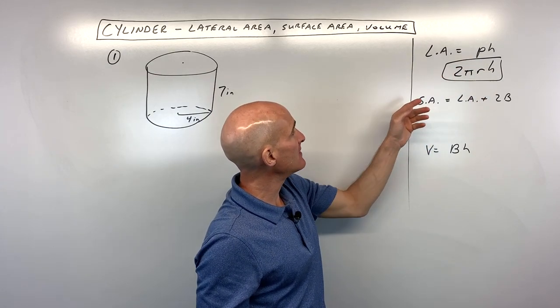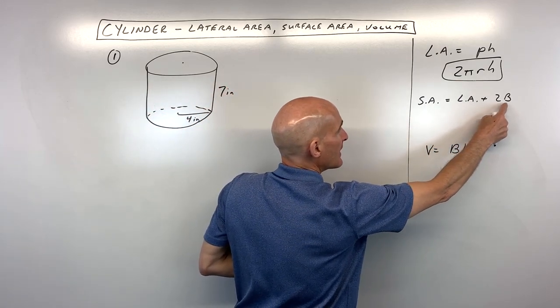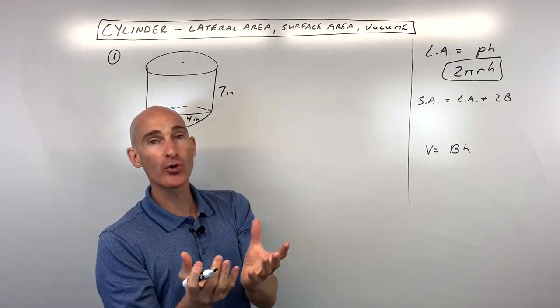For surface area, you're taking the lateral area, which is the area of the sides, but then you're adding on the area of the base times 2, since we have a top and a bottom. So surface area is like the total area.